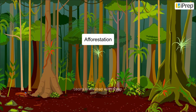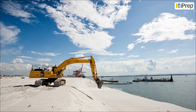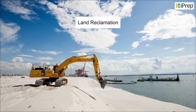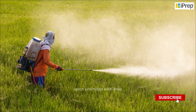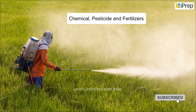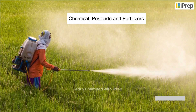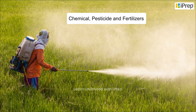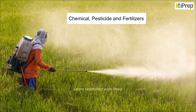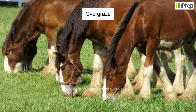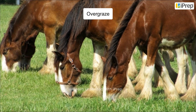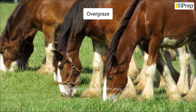Conservation of land resources involves keeping a check on the present rate of degradation of land, afforestation, land reclamation, regulated use of chemicals, pesticides and fertilizers, and checks on overgrazing of land by animals.